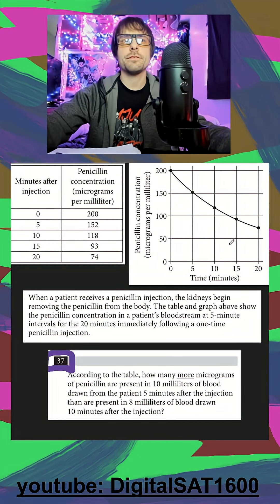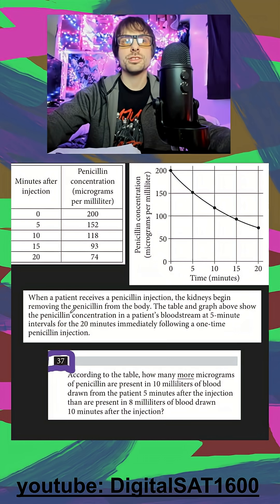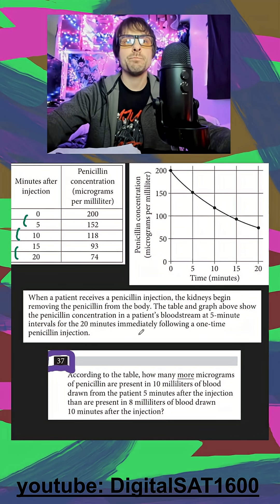I see a table, I see a graph, and they tell us that a patient receives a penicillin injection and the kidneys begin removing it from the body. The table and graph show the penicillin concentration in five-minute intervals for 20 minutes total following a one-time injection. I look above and see the five-minute intervals and how the concentration is decreasing over time.